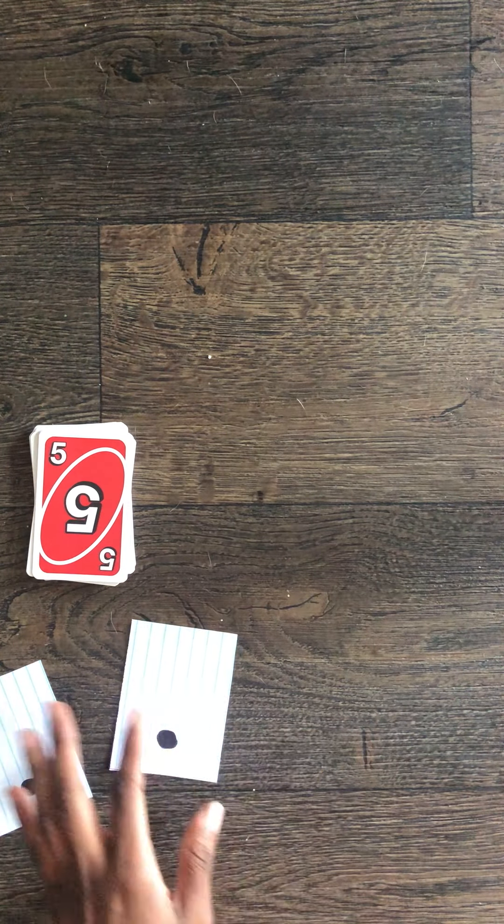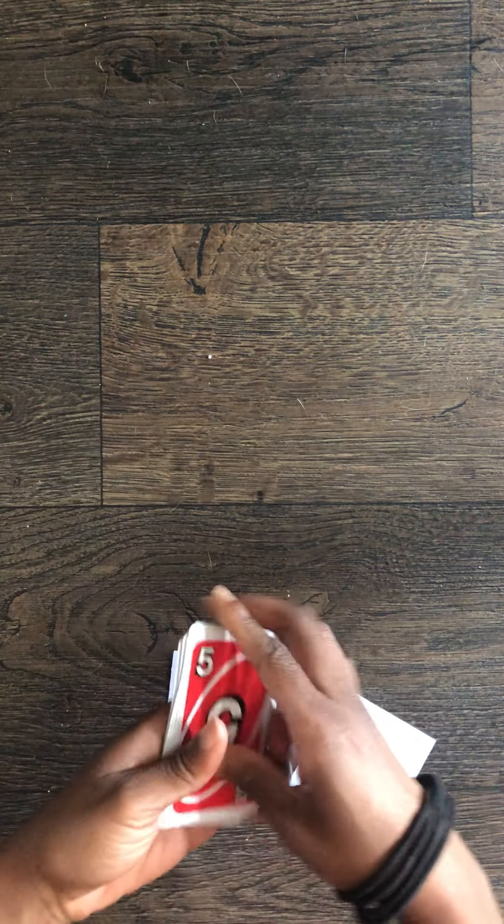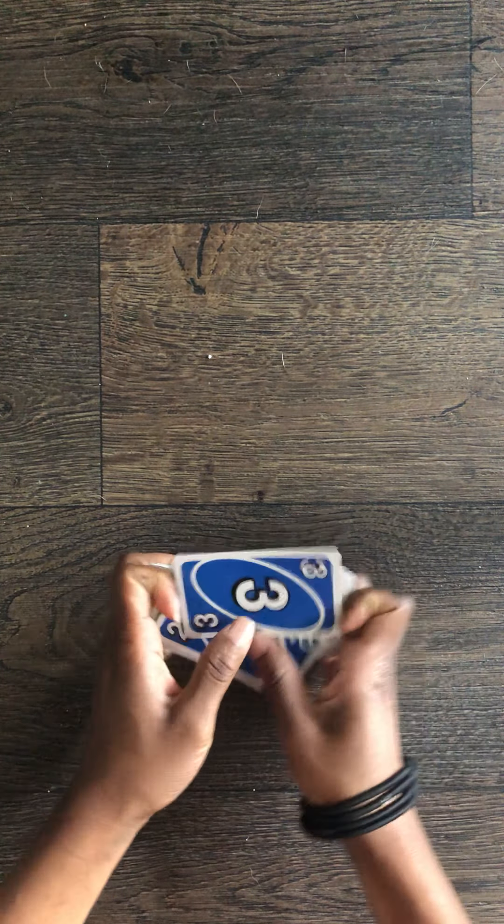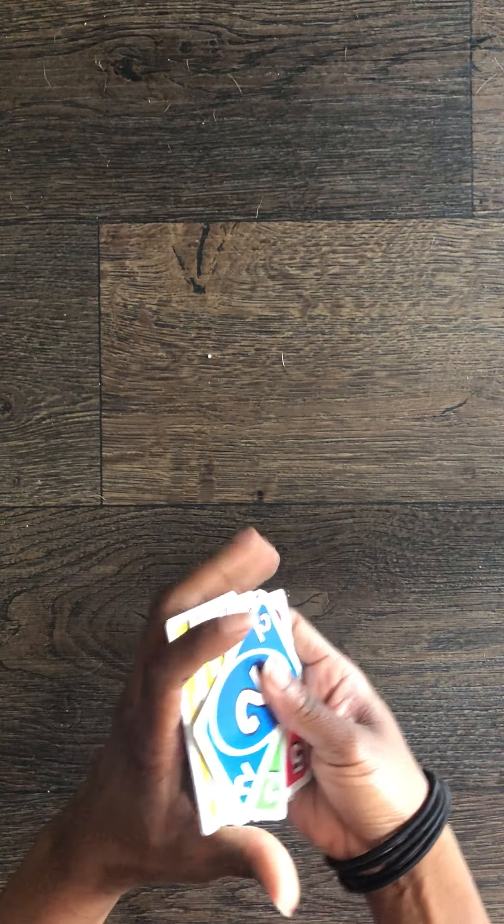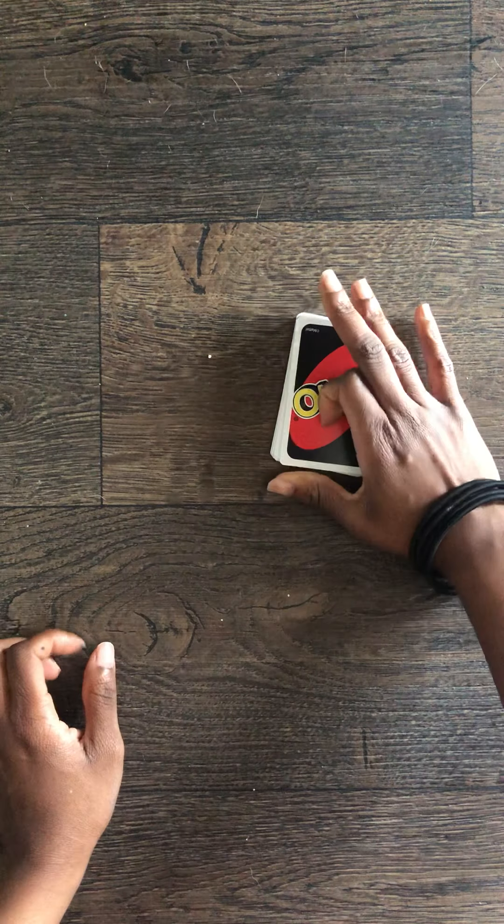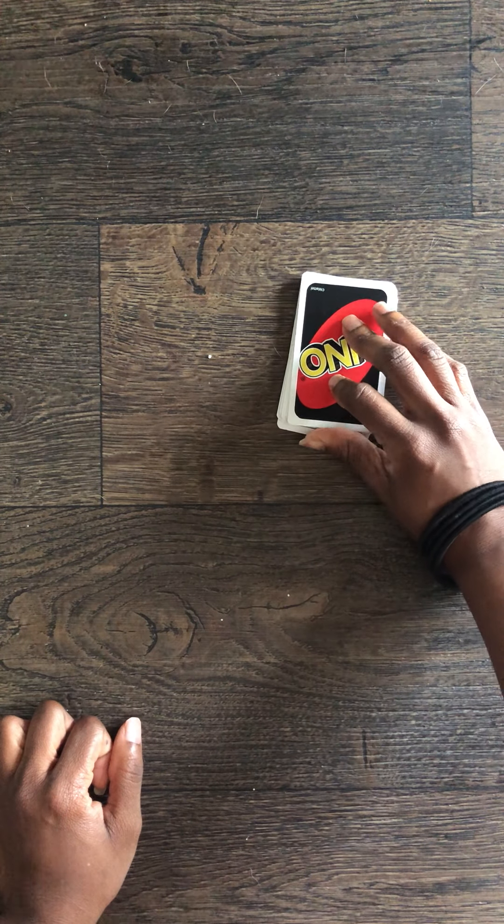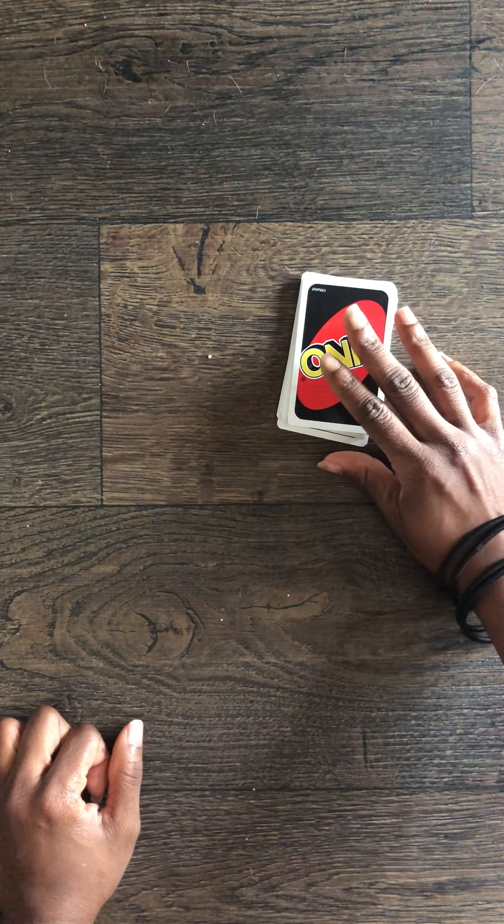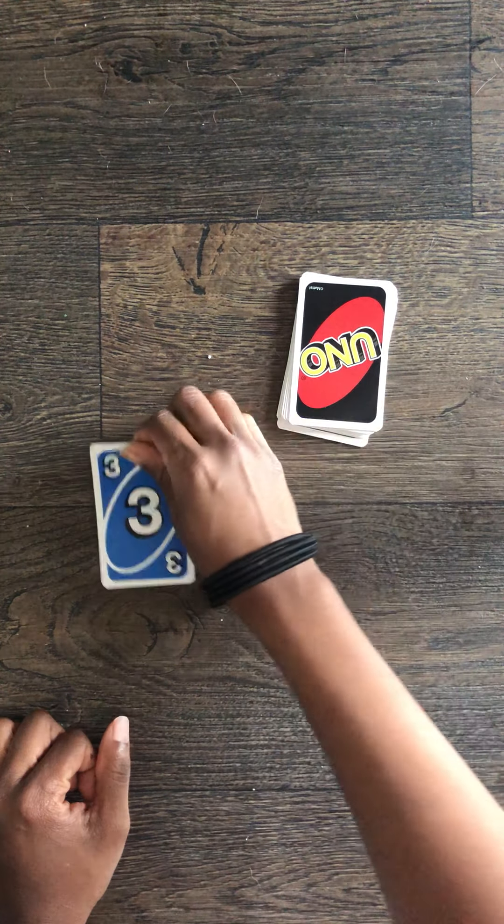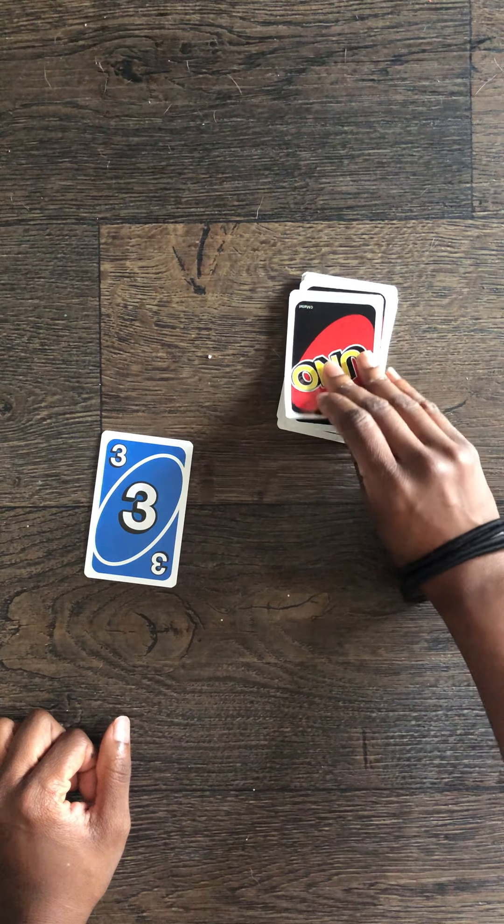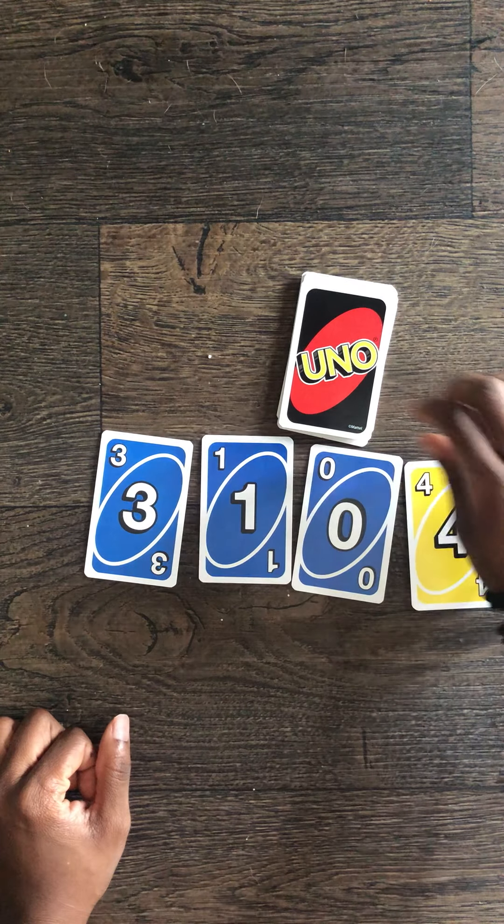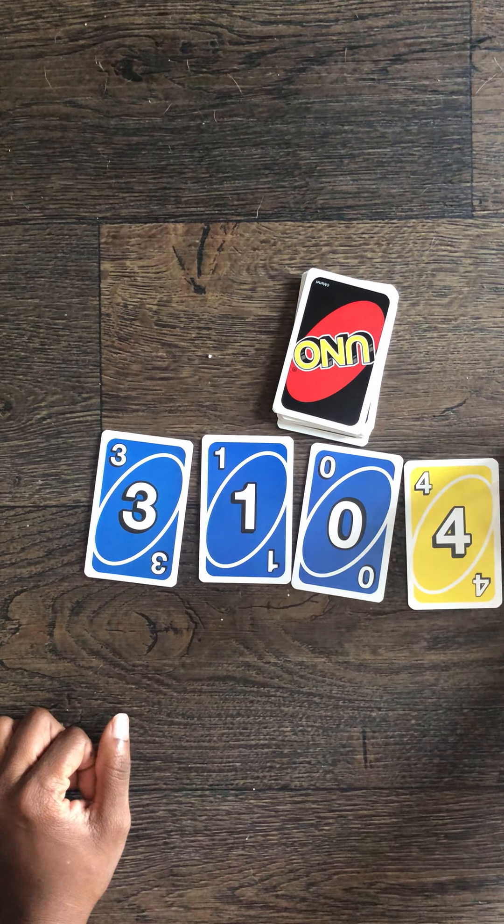So the first thing you want to do is take the cards and shuffle them. Get them nice and mixed up and you place them in a pile face down and you're gonna flip over the cards. Ten cards to create two five-digit numbers up to the thousandths place. So I flipped over the first number there's a 3, 1, 0, 4, 8.